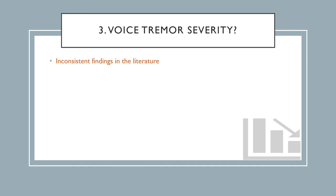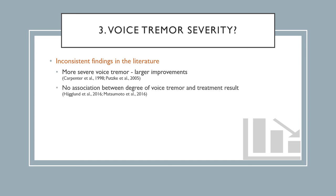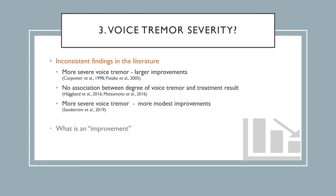Regarding the influence of baseline severity, the reports are inconsistent. Some have found that individuals with more severe voice tremor also have the largest improvements with DBS, while others found no association between the degree of voice tremor and subsequent treatment result. In our latest study, we found that patients with more severe voice tremor had more modest improvement compared to those for whom voice tremor was completely resolved. When evaluating these findings, it is important to reflect on what the authors consider to be an improvement — whether it is complete resolution, improvement by 50%, or by 75% — as this will affect the study's conclusions.